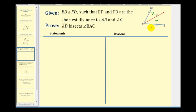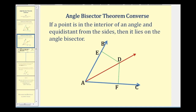Let's take a look at a larger diagram and talk about a strategy before we write this out. We're given that this segment is congruent to this segment, and since we're told that the length of these two segments is the shortest distance to these two blue rays, these segments must be perpendicular to the rays. This gives us two small right triangles.